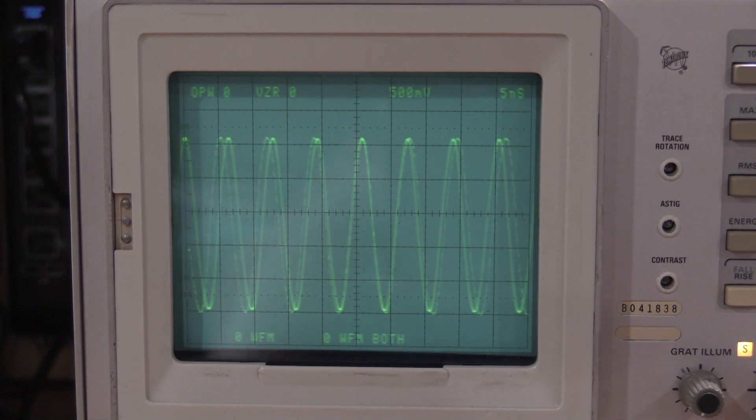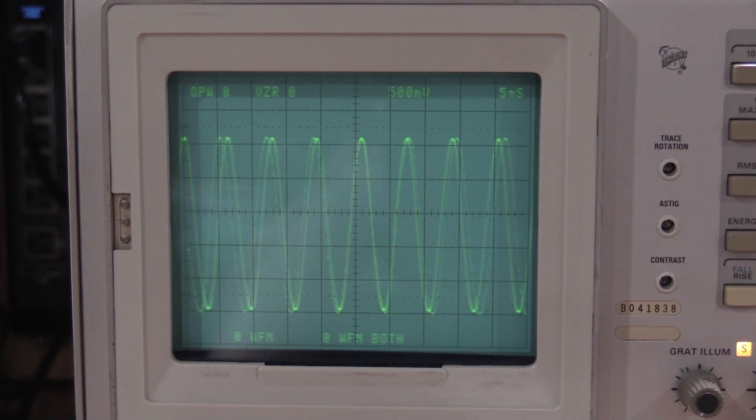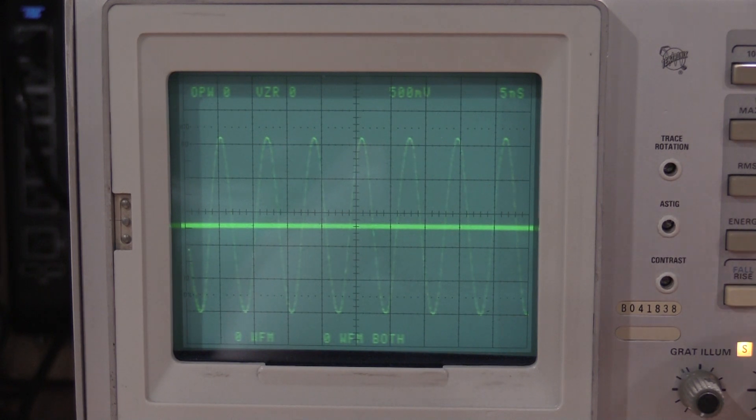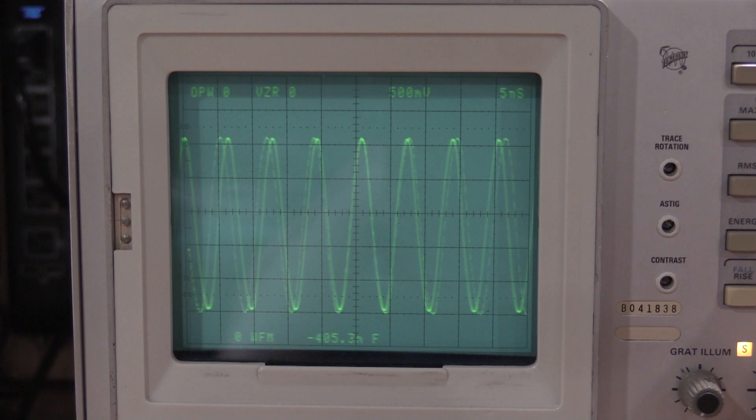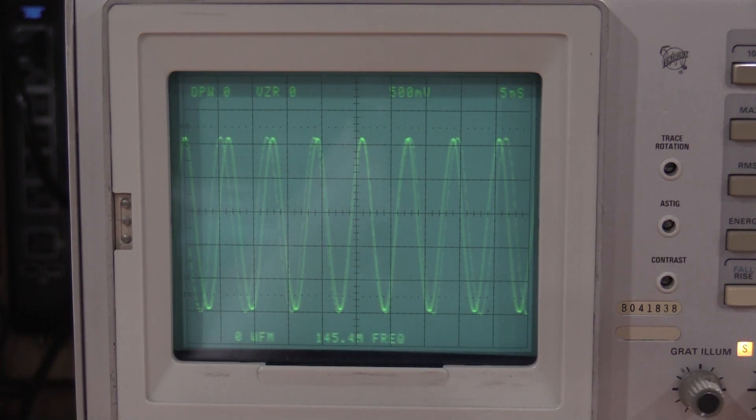Let us see what it says a frequency measurement is. Let us see how the measurement functionality is working. We will set this as ground reference. We will go back to DC. Period. 145.4. We are still at 147. I will have to see what the spec is on this guy.